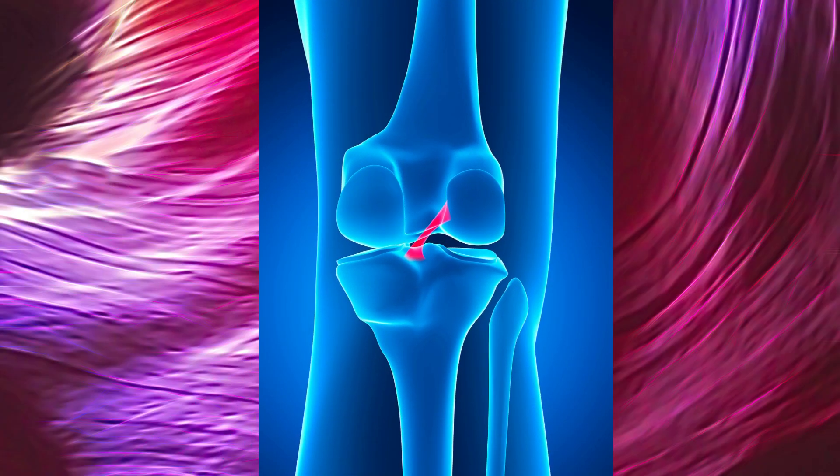Inside the bones are bone marrows that are very important for the body to manufacture blood cells. Bone marrows are of two types: the red bone marrow and the yellow bone marrow. The red bone marrow is found in the humerus, femur, pelvis, and vertebrae, while the yellow bone marrow is found in many other bones.